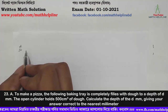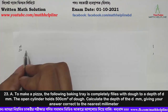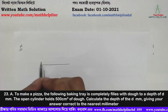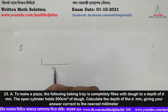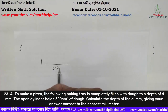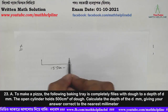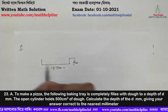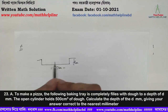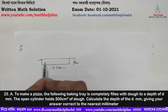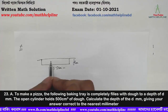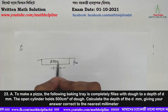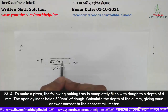Give your answer correct to the nearest mm. We can see that the radius of the dough is 15.5 cm.